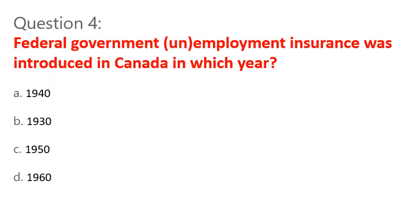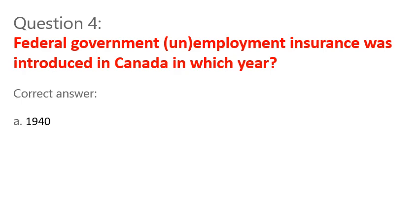Question 4. Federal government unemployment insurance was introduced in Canada in which year? A. 1940. B. 1930. C. 1950. D. 1960. Correct answer: A. 1940.